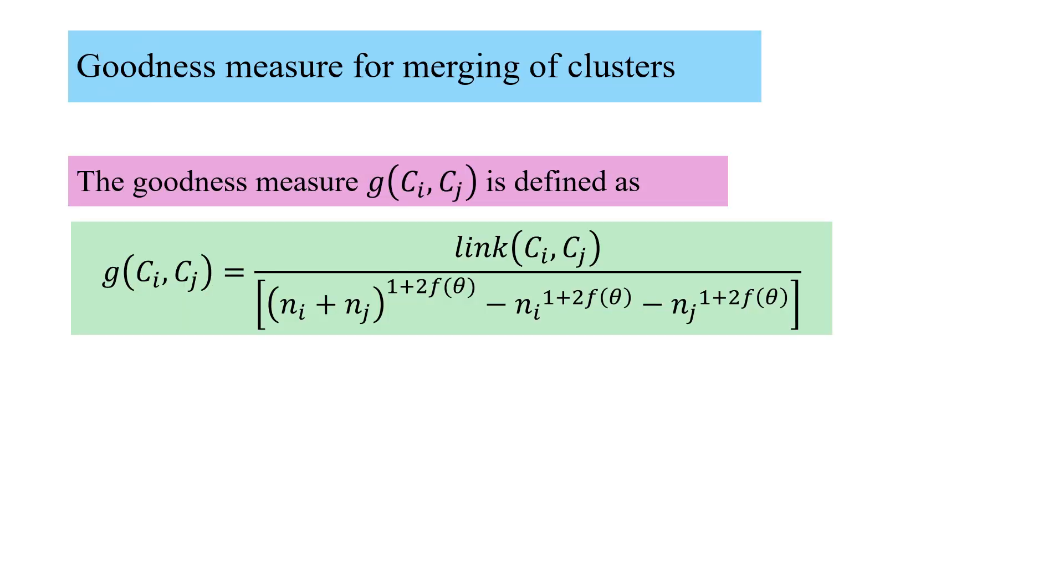Finally, the goodness measure for merging of clusters. The ROCK algorithm works in an agglomerative manner, merging clusters, but for this the goodness measure is defined with the link as its base.